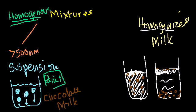Now, if we get to a range that's a little bit smaller than that, if we get to a situation where we're at 2 to 500 nanometers, we're dealing with a colloid.